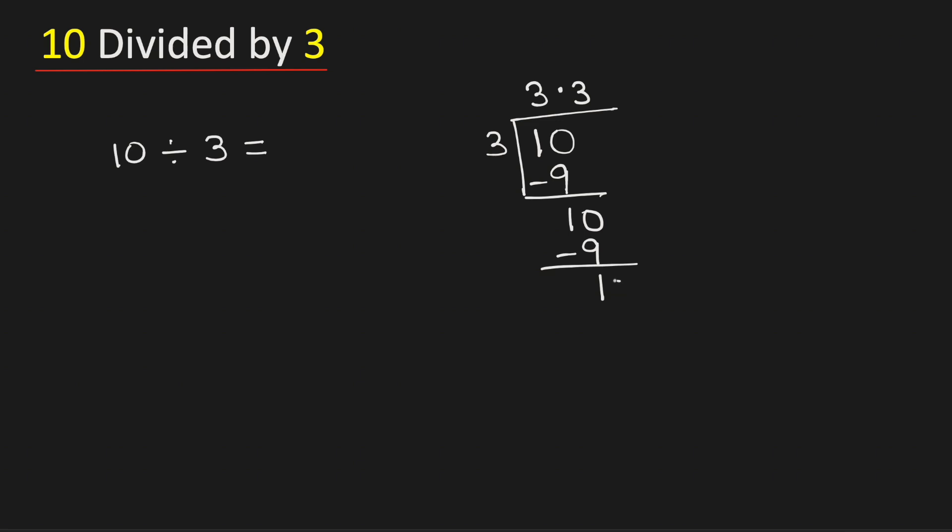Now again we need to borrow one zero and we have 3 times 3 is 9. Subtract, we get 1.